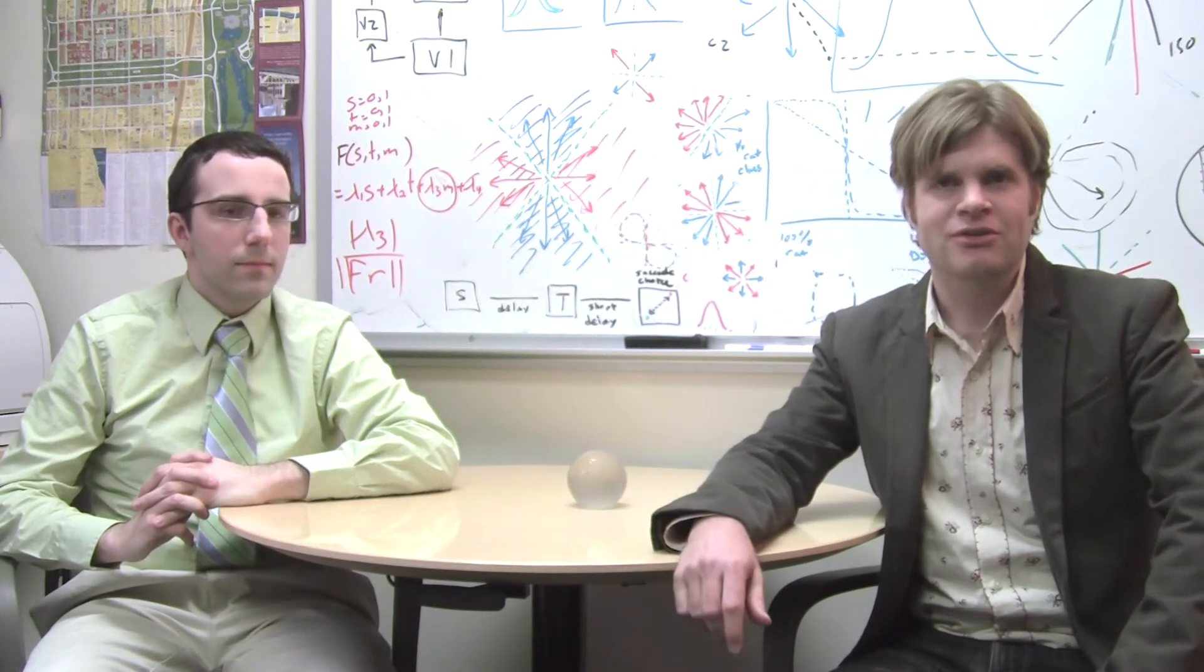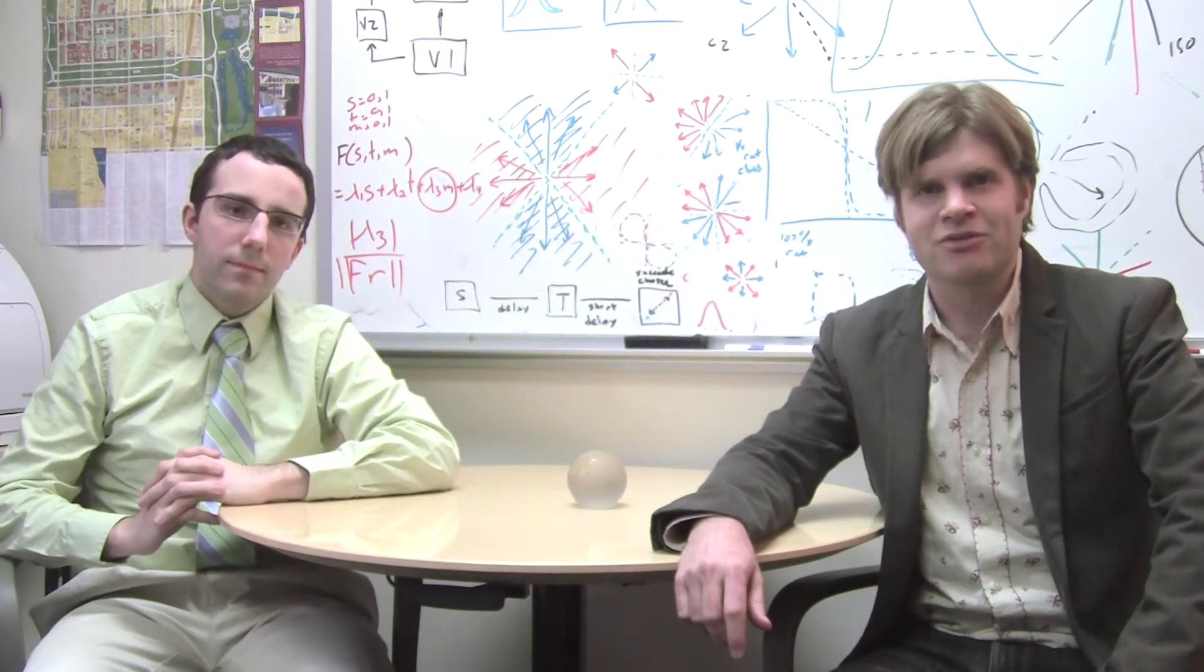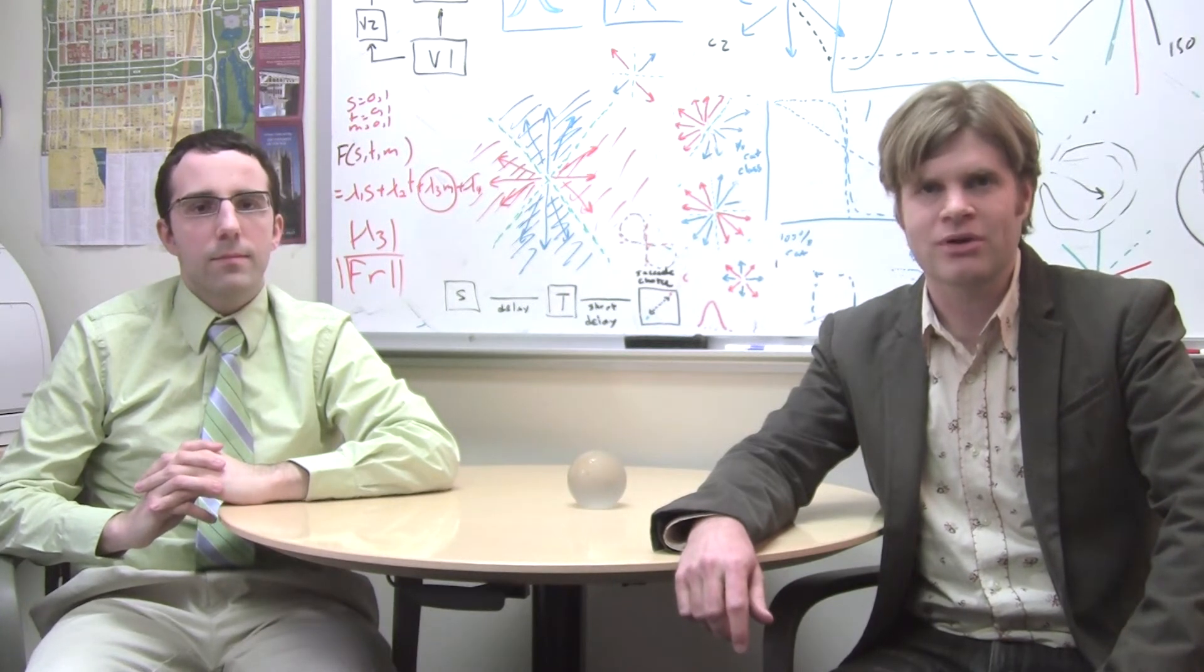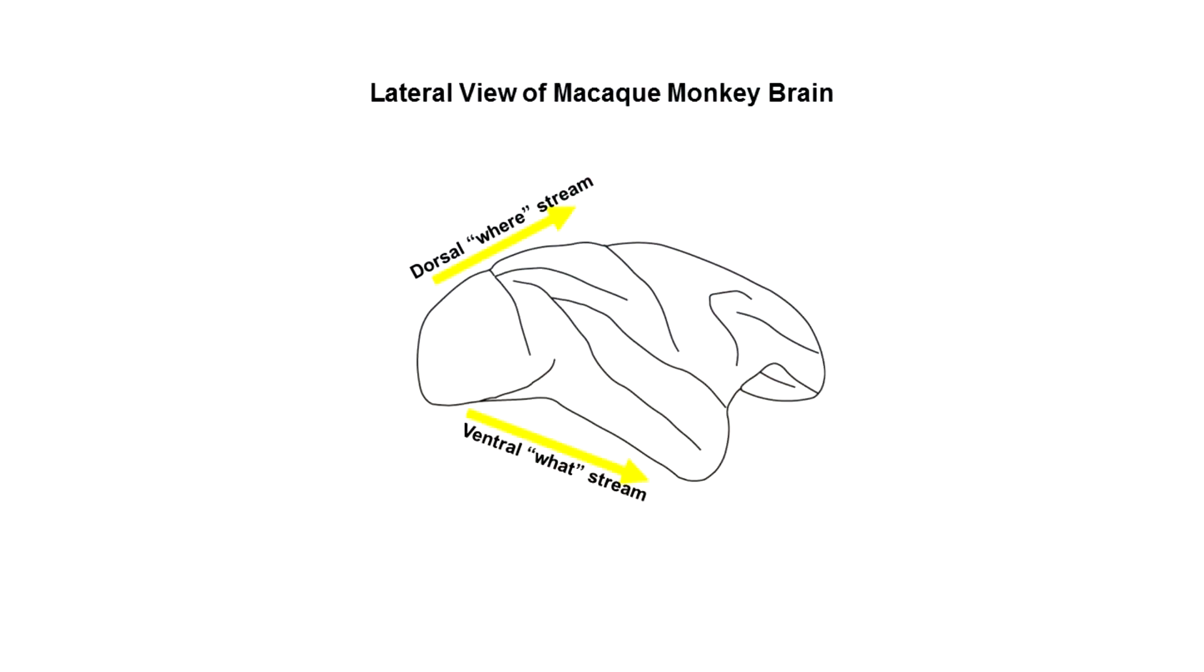A number of recent neurophysiological studies have found that information about visual categories can be encoded in the spiking patterns of neurons in several cortical areas. In recent work in my lab, we have explored the role of the posterior parietal cortex, shown here in this lateral view of the monkey brain. In particular, we have focused on the lateral interparietal area, or LIP, located within the interparietal sulcus.